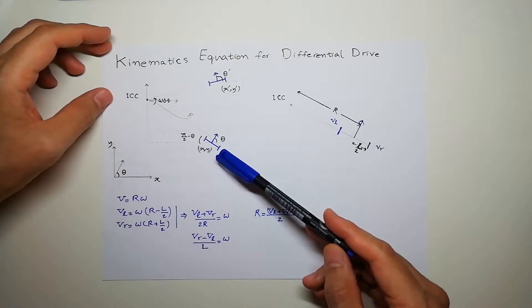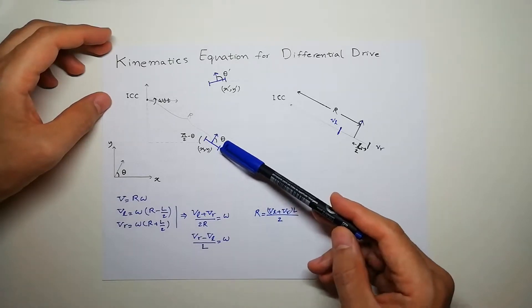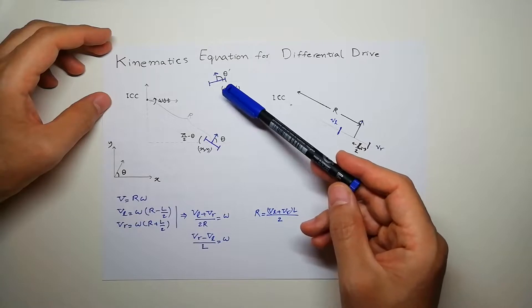The wheels turn at different speeds. So the robot ends up at a new position, X-prime, Y-prime and theta-prime.